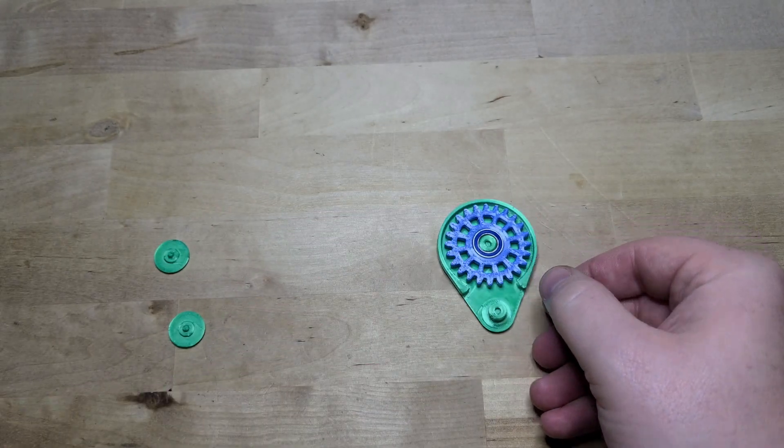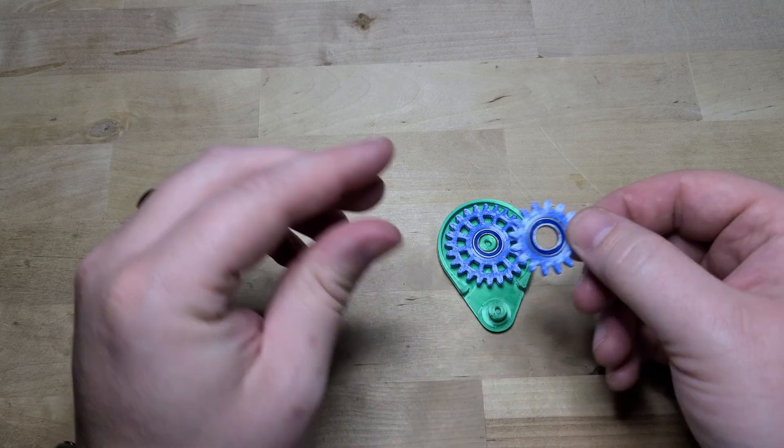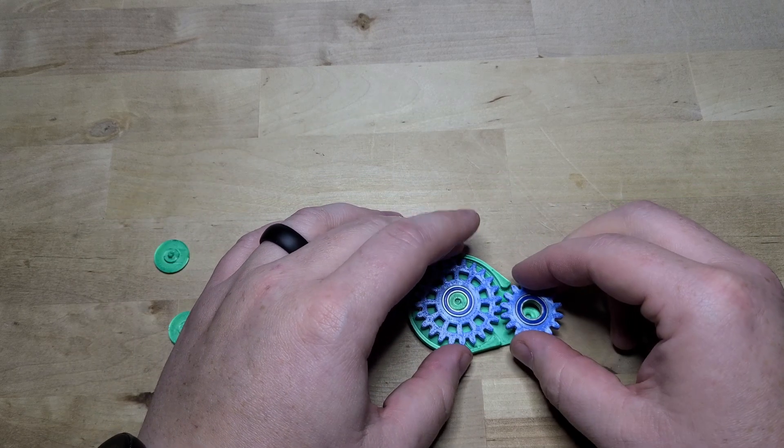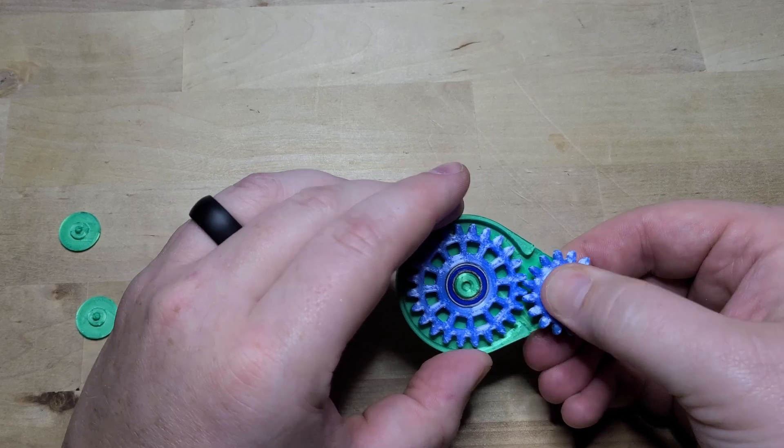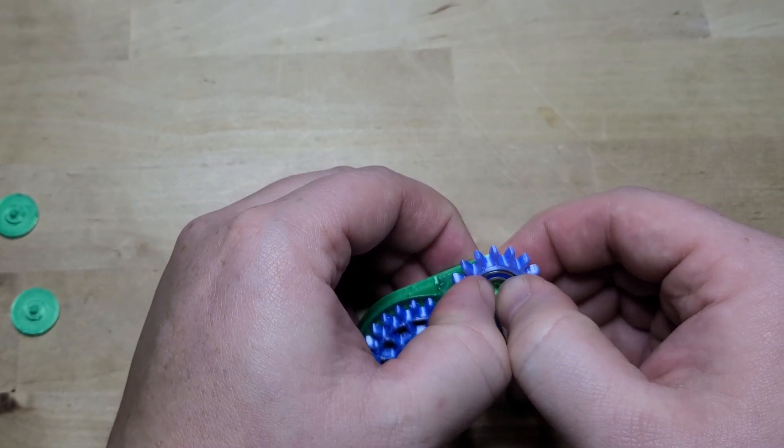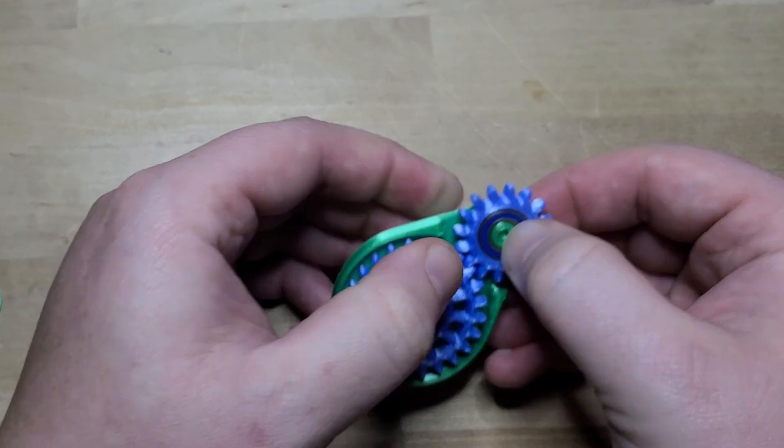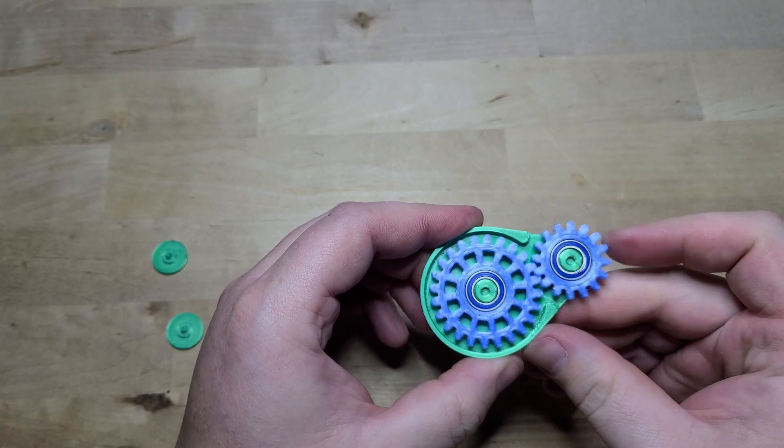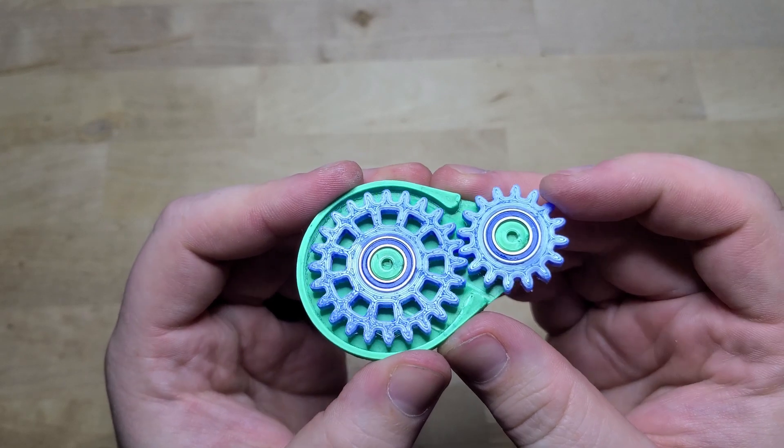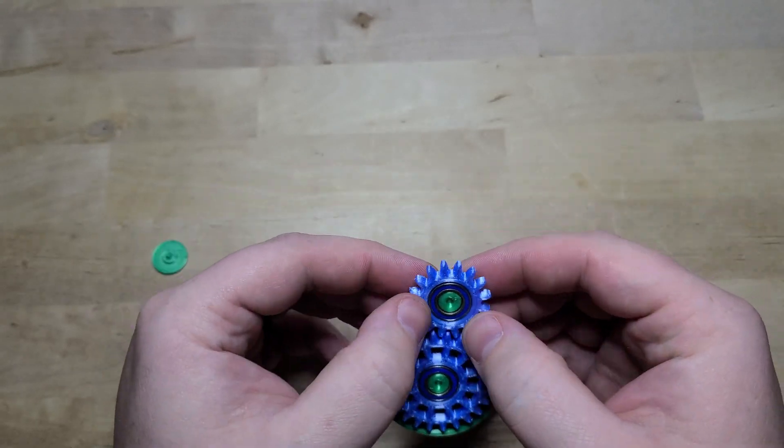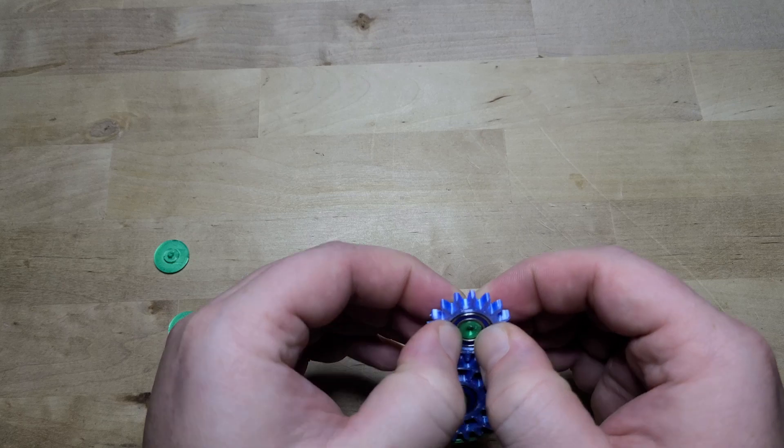Now it's time to add the small gear. Align the gear teeth and press the bearing into place. Test that the gears mesh properly and spin freely. Be sure that both bearings are seated completely.